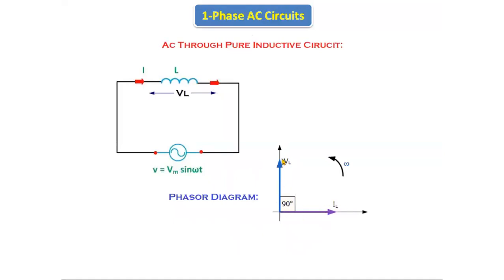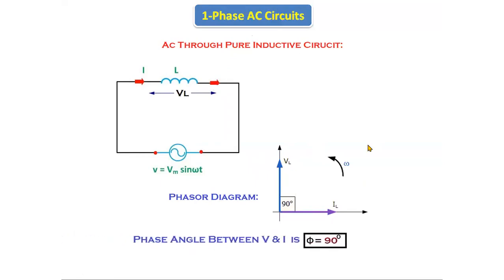If we see the phasor diagram, current lags the voltage by 90 degrees. The phasor notation is always taken in the anti-clockwise direction. So we can say that current lags the voltage by 90 degrees in the pure inductive circuit.